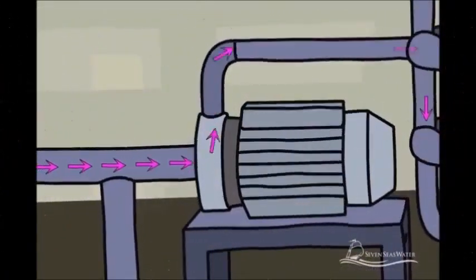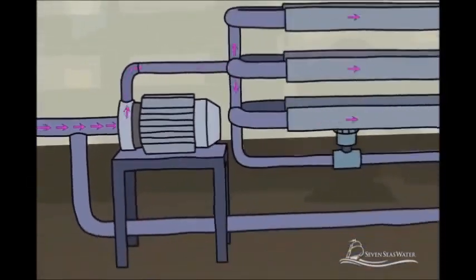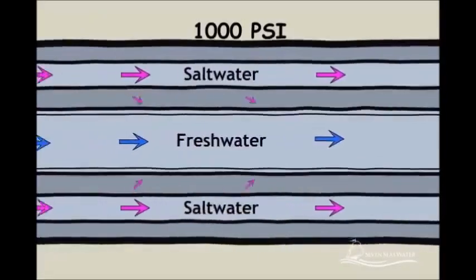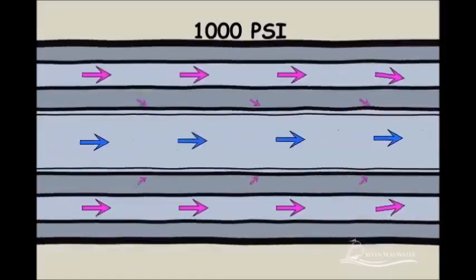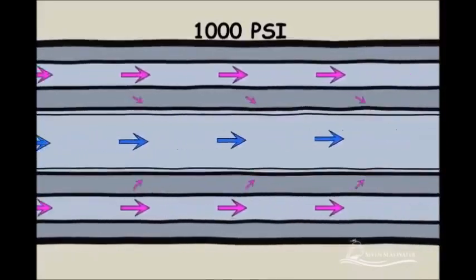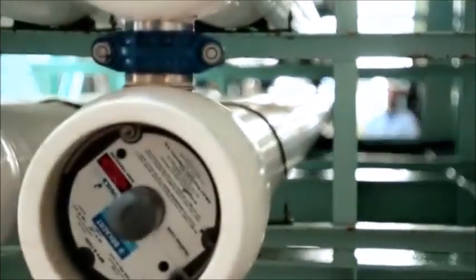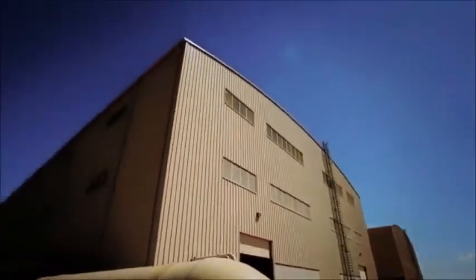High-pressure pumps increase the pressure of the seawater up to 1,000 psi. The pressure needs to be sufficiently high to overcome the naturally occurring osmotic pressure and force water from the salt water side, through the reverse osmosis membranes, to the freshwater side. In reverse osmosis, salt water is pumped through semi-permeable membranes to separate water from the dissolved salts.